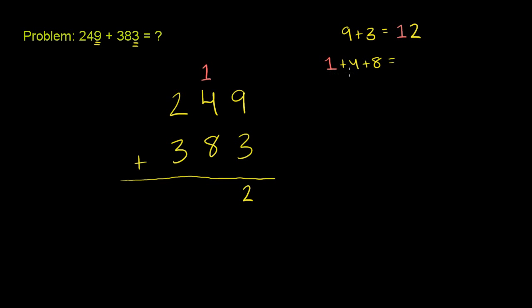And what do you get? 1 plus 4 plus 8 is 5 plus 8, that is 13. And once again, this is in the tens place, so it actually represents 130. But you don't have to think about that—the process is fairly straightforward.